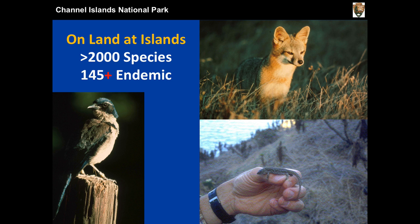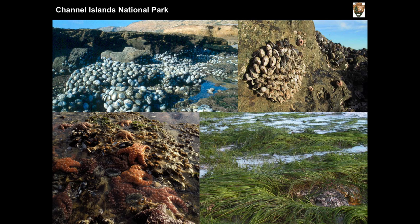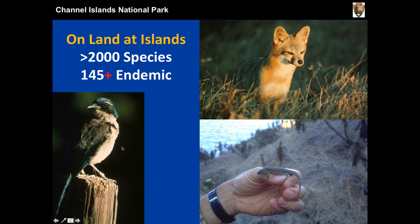On land, there are well over 2,000 species on the islands — plants and animals. There are well over 105 that are endemic, and we're learning about more and more endemic species such as ants and other species as time goes on. There are the Island Scrub Jay, the Island Night Lizard, and the Island Fox. I'm going to touch on the fox story just a little bit here.